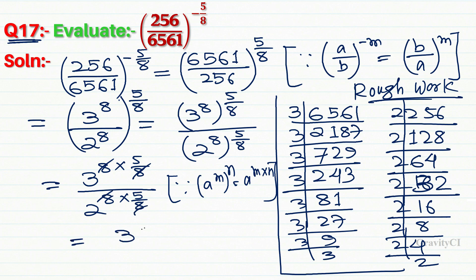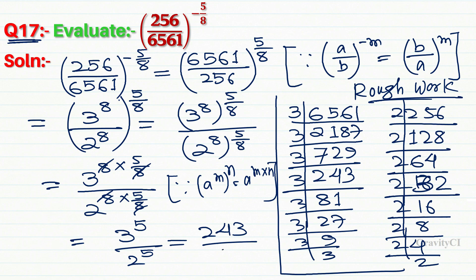Equal to 3 to the power 5 upon 2 to the power 5. और 3 to the power 5 यह होता है 243 upon, और 2^5 यह होता है 32. So the final answer is 243/32.